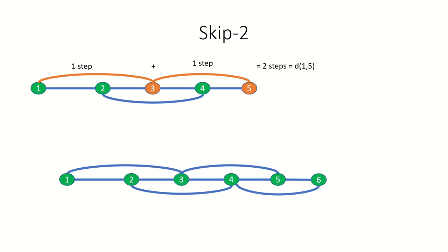Well taking the biggest steps we can, we can get to the fifth vertex in two steps but there isn't any way to get to the sixth vertex in two steps. Even if we go forwards one step to get our big steps in line with the sixth vertex we're still adding one step to the path no matter what we do. So the distance between the first and sixth vertices is 3.